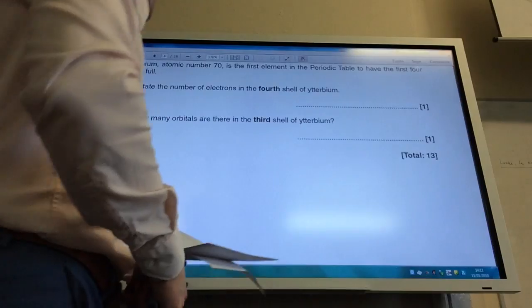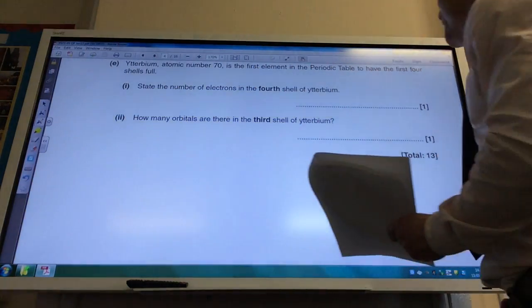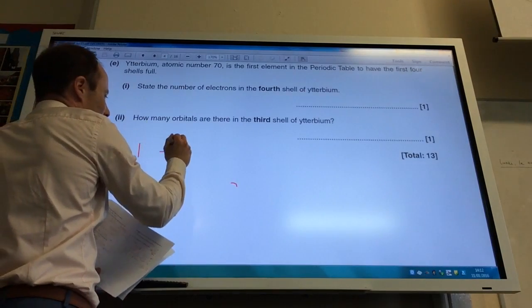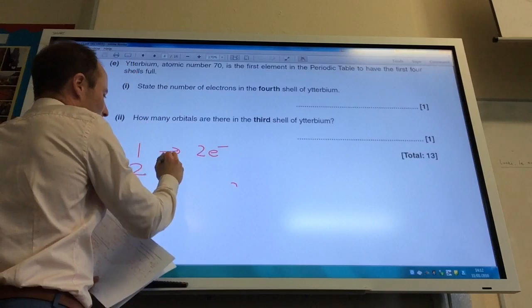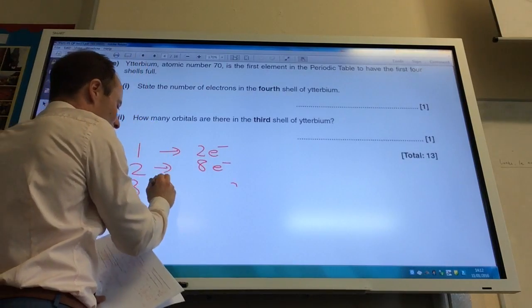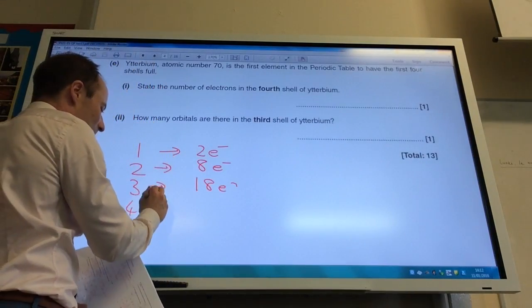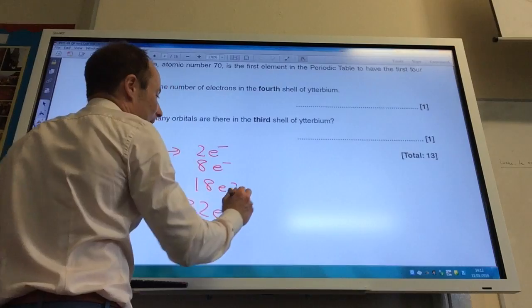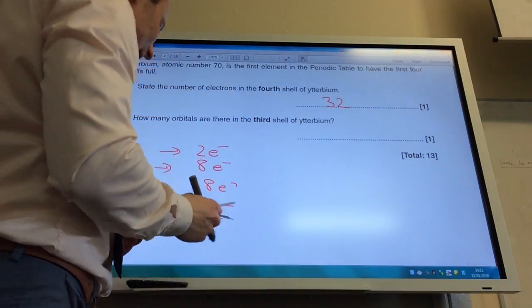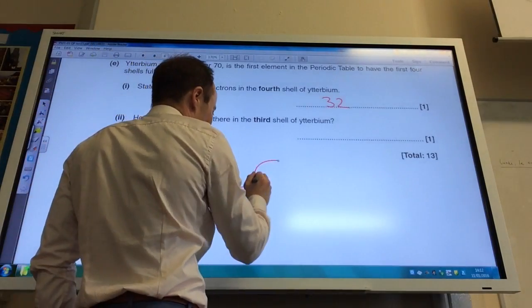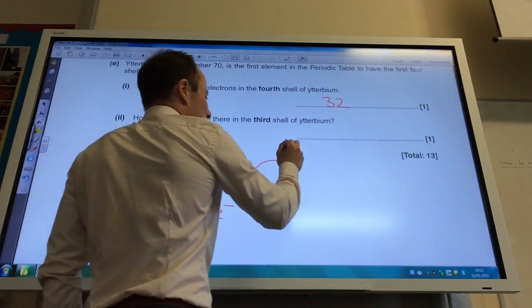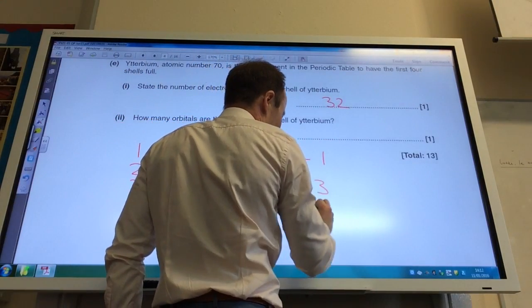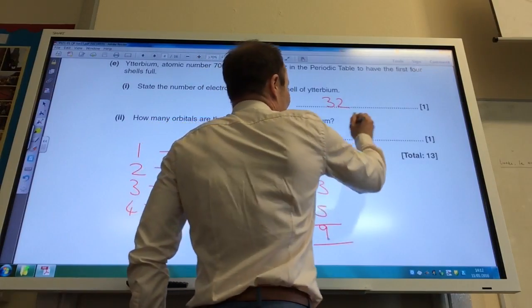We need to state the number of electrons in the fourth shell of ytterbium. In shell number one, I have 2 electrons. In shell number two, 8 electrons. In number three, 18 electrons. In shell number four, I'm also using the F subshell as well, so I need to add 14 to that to give me 32 electrons. How many orbitals are there in the third shell? The third shell consists of an S, a P, and a D subshell. The S has one orbital, the P has three orbitals, and the D has five. If you add them all up, you get to nine.